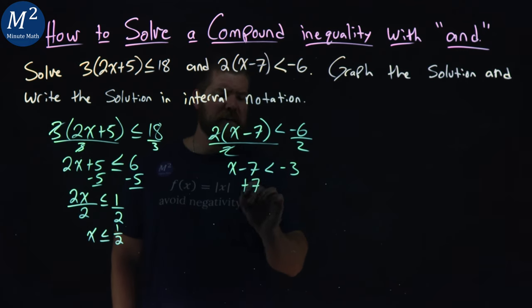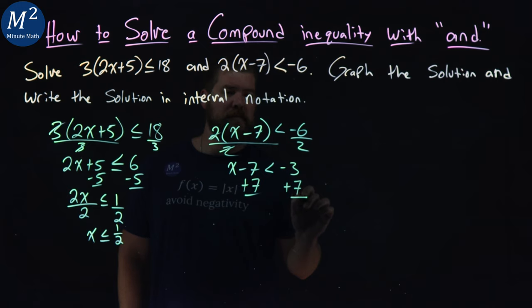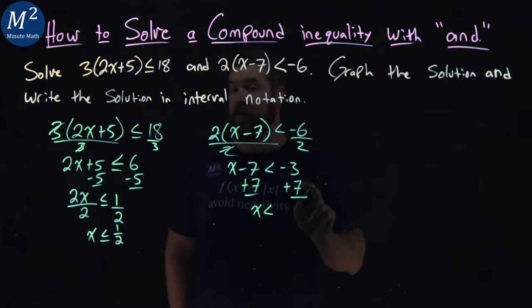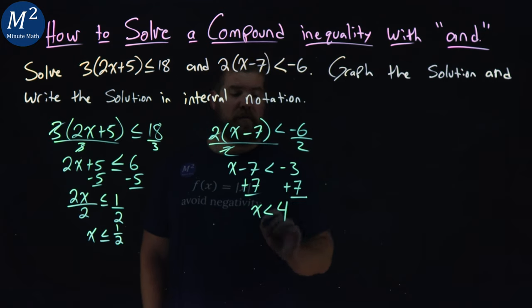From there, I'm going to add 7 to both sides, and I'm left now with x is less than -3 plus 7, which is a positive 4.